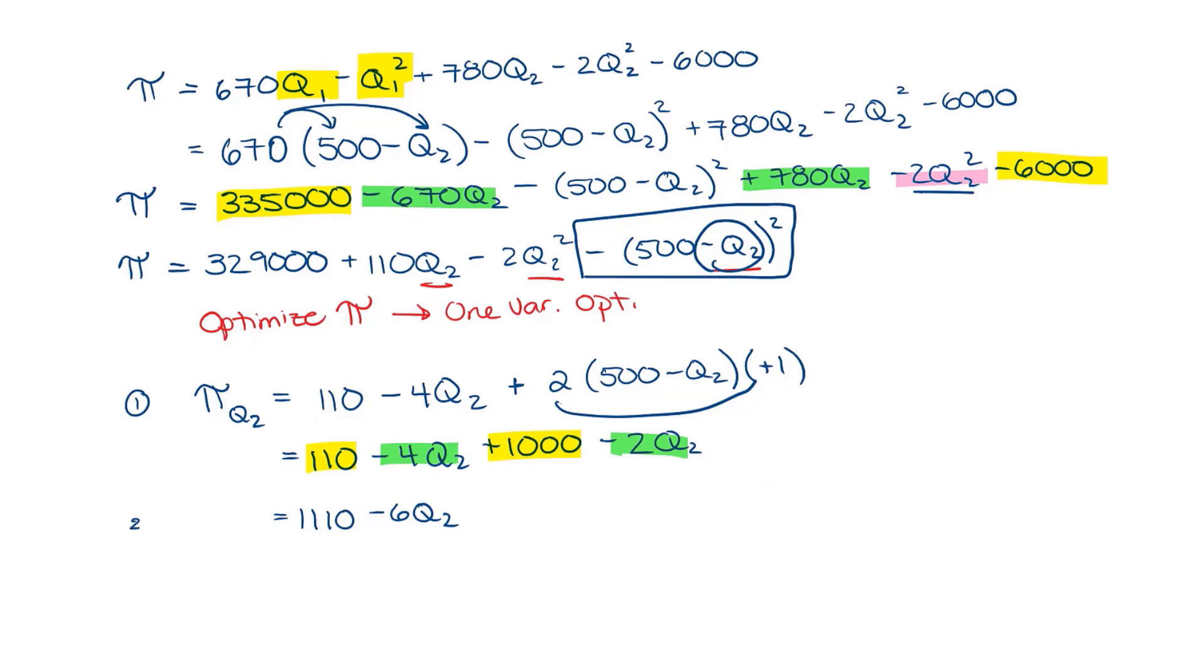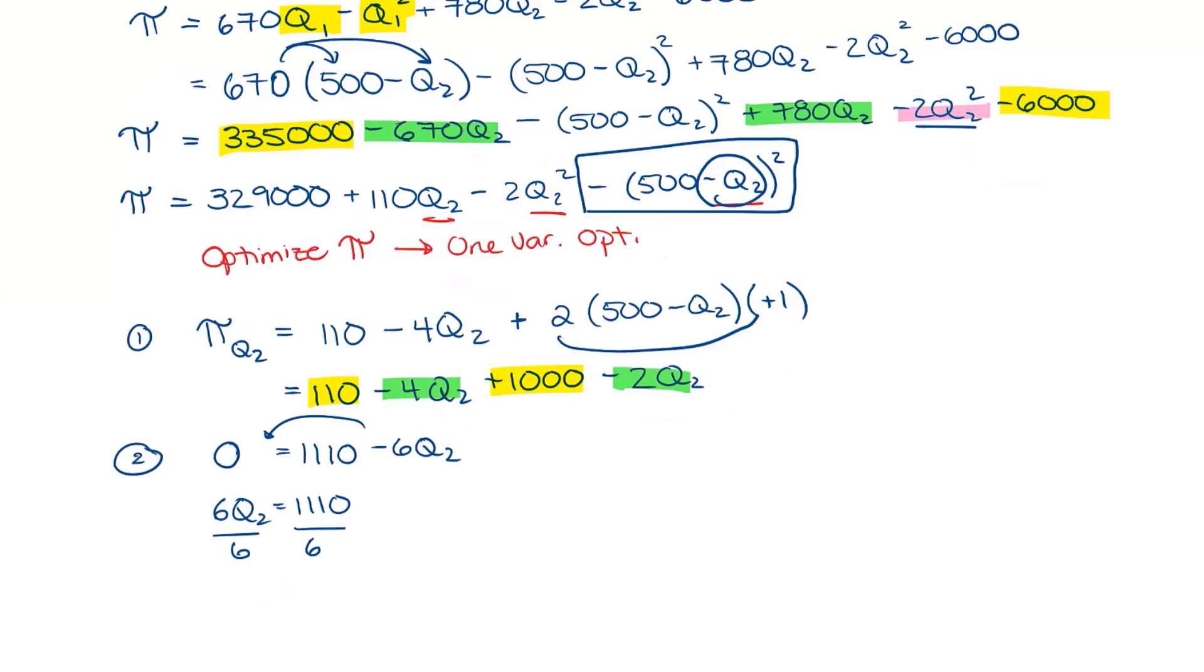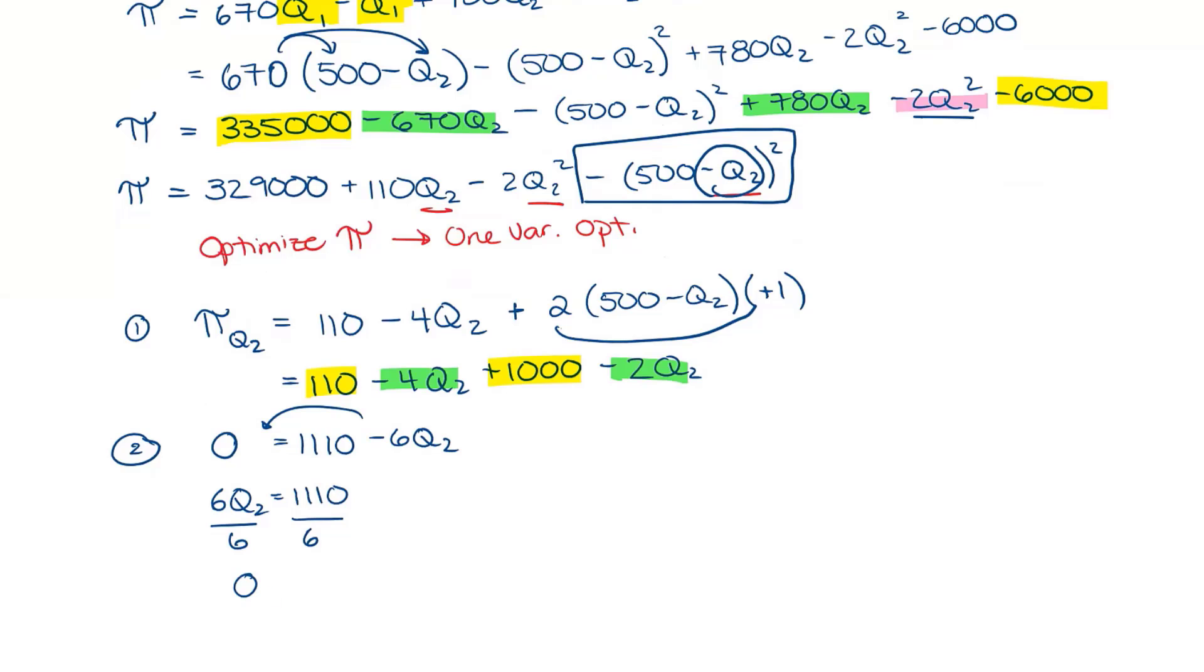So the next step for my one variable optimization is to set this equal to 0 and solve for my Q2 value. So I'm moving my 6Q2 over to the other side. I have 6Q2 equals 1,110. Dividing both sides by 6, I get Q2 equals 185.